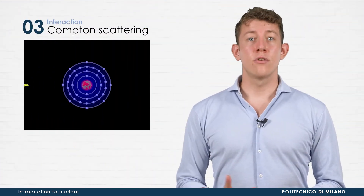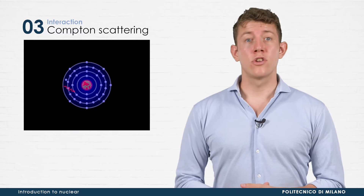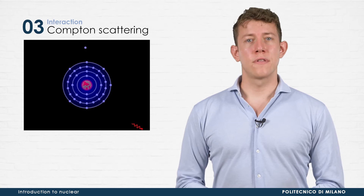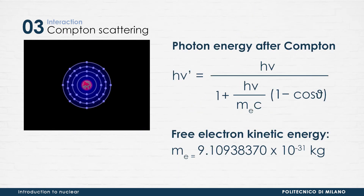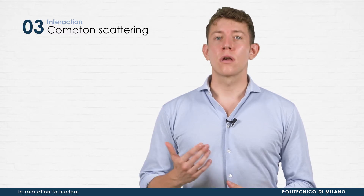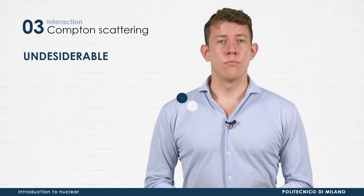Compton scattering is an interaction in which a photon collides with a charged particle, usually electrons, and loses only a portion of its energy in the process. Following the event, the photon is deviated from its original path by an angle theta. When theta is close to 180 degrees, the maximum energy transferred is achieved, and the photon leaves with about 256 kilo electron volts. The fact that the photon doesn't deposit all its energy in the matter in a single interaction makes Compton scattering undesirable in the detection process.